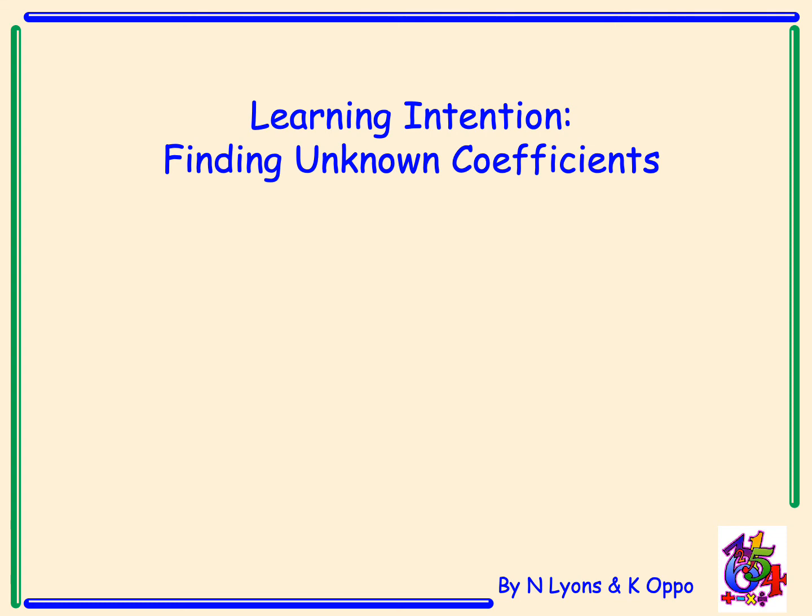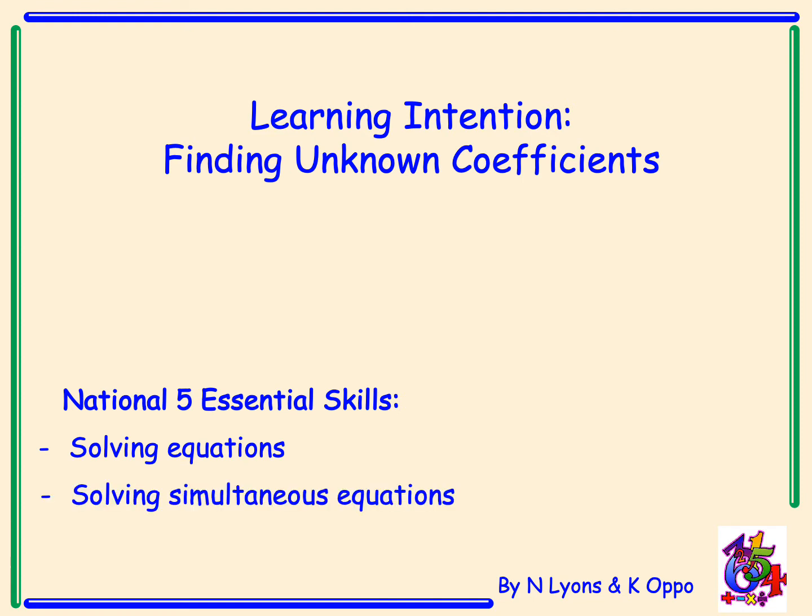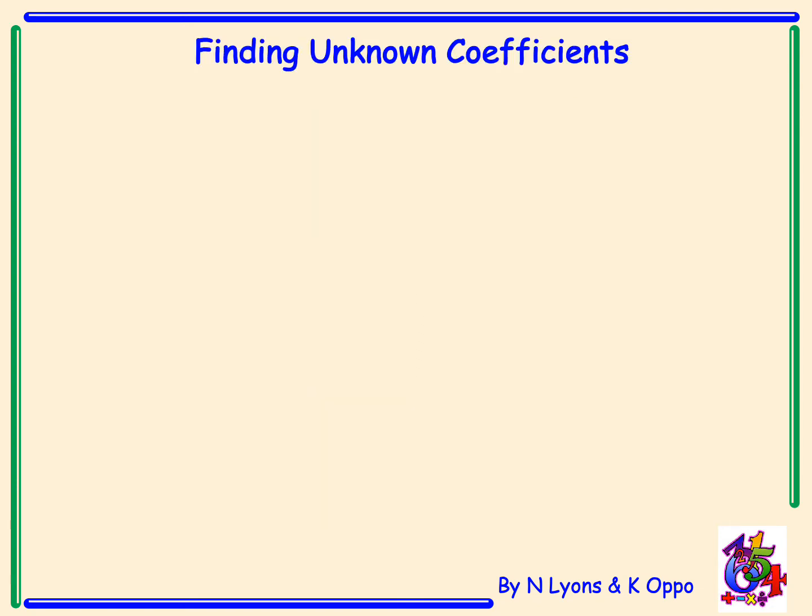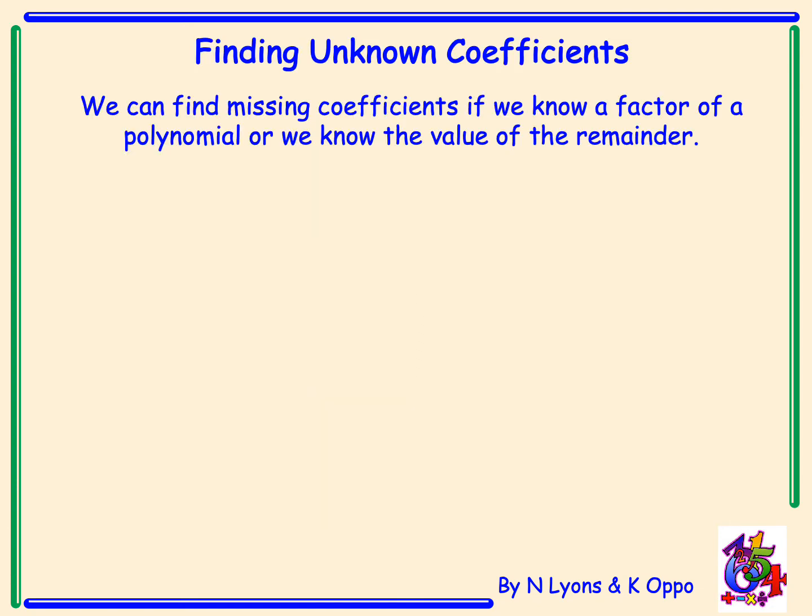Today we are going to learn about finding unknown coefficients of polynomials. The national five essential skills for this are solving equations and also solving simultaneous equations. Finding unknown coefficients. We can find missing coefficients if we know a factor of a polynomial or we know the value of the remainder.